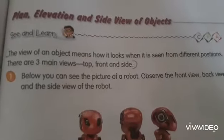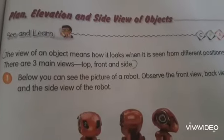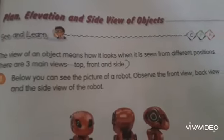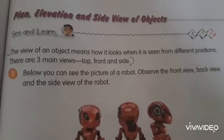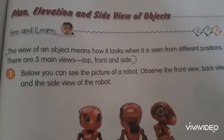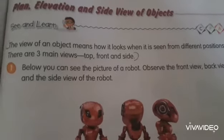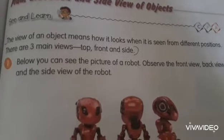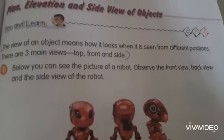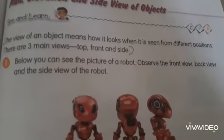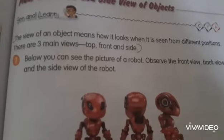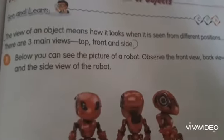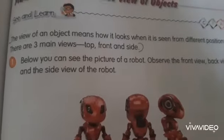Today our topic is plan, elevation and side view of objects. What do we understand by view? The view of an object means how it looks when it's seen from different positions. These three different positions are top, front and side.